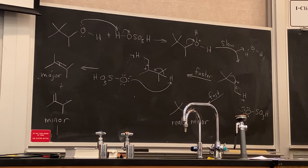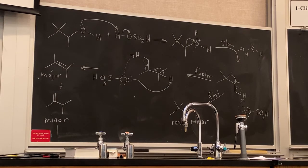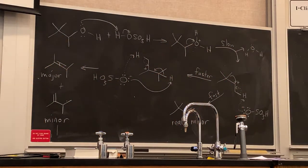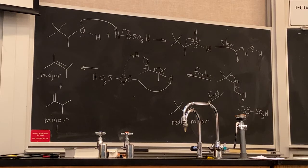Anytime you form a carbocation intermediate, you have the possibility of a rearrangement. Any of our E1 or SN1 reactions involving alkyl halides — the examples we chose were specially chosen so they wouldn't involve rearrangements. But if you had an alkyl halide that formed a carbocation capable of rearranging, that would happen. Every time we form a carbocation, we need to look at the beta carbons and see if we can shift a group to make a more stable carbocation.